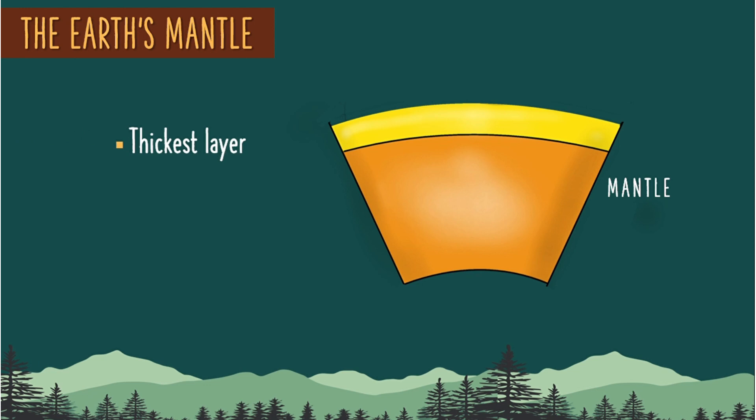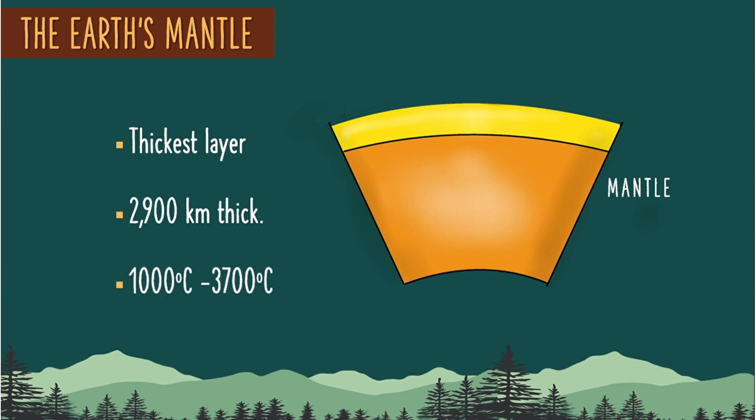The mantle is the thickest layer of the Earth. It is located below the crust and is about 2,900 kilometers thick. It is composed of silicate rocks rich in magnesium and iron. Its average temperature ranges from 1,000 degrees Celsius to 3,700 degrees Celsius. The intense heat causes the rocks to rise and sink when cooled.